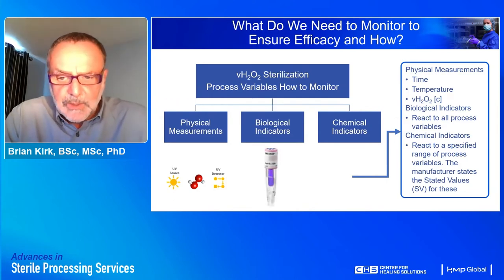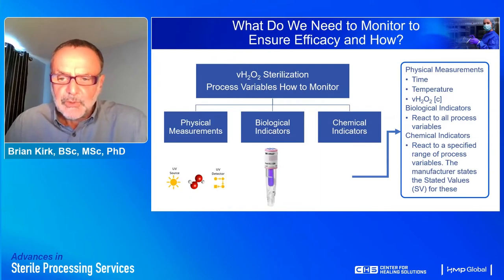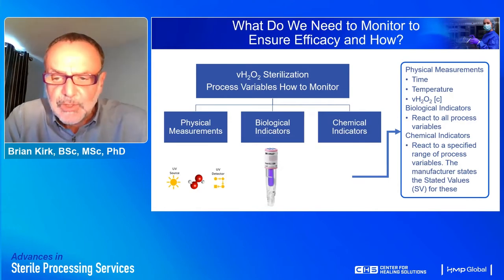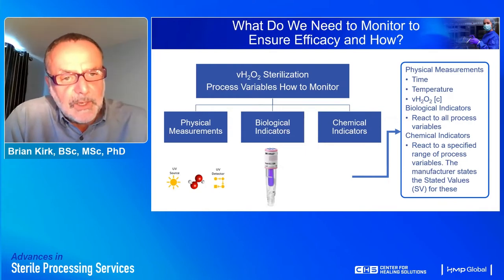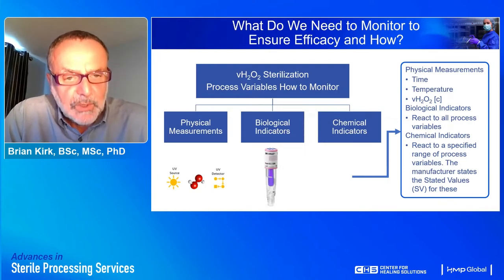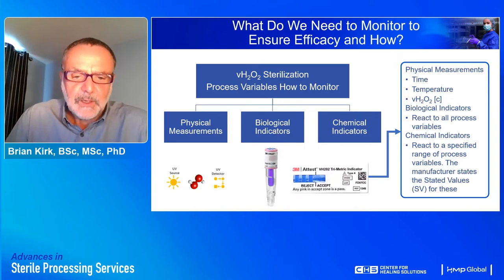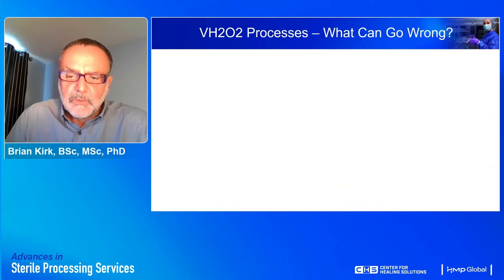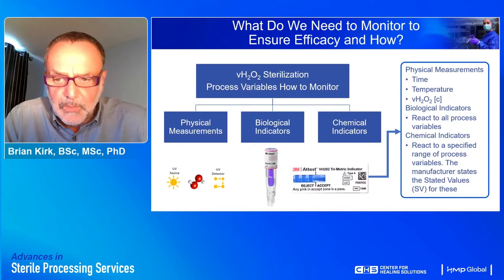Biological indicators are preparations of living microorganisms — usually a bacterial spore with a defined, calibrated resistance to the process — that are ultimately inactivated by the process. Biological indicators will react to all of the critical process variables. We also have chemical indicators, which usually give some kind of color change and respond in a defined way to the process they are monitoring.